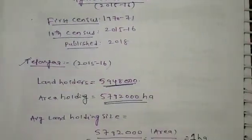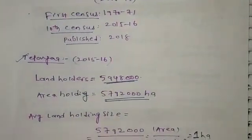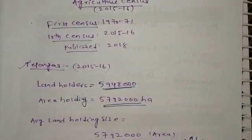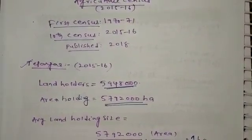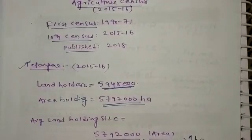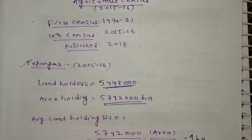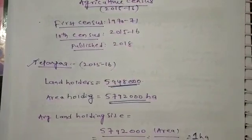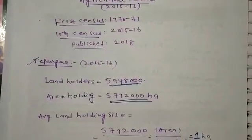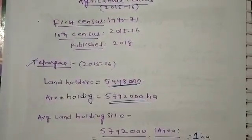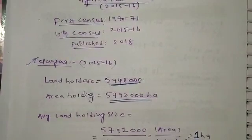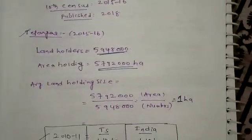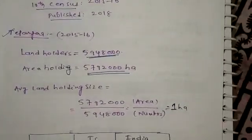Agriculture Census: how much land is held by farmers? The Agriculture Census is from 2010-2011, and we are now at 2015-2016, which is the 10th census. The first census was in 1971 and the 10th census is 2015-16, published in 2018.